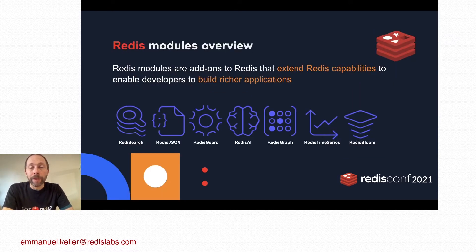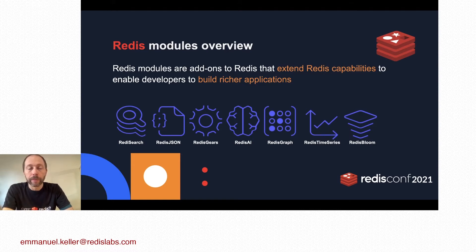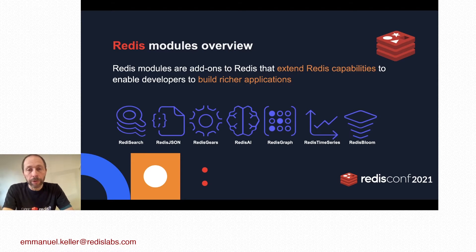Redis modules — what are they? Basically they are extensions to Redis. Redis modules usually add new commands to Redis or implement new data types. Very popular modules currently are Redis Search, Redis JSON, Redis Gears, Redis AI, Redis Graph, Redis Time Series, and Redis Bloom.